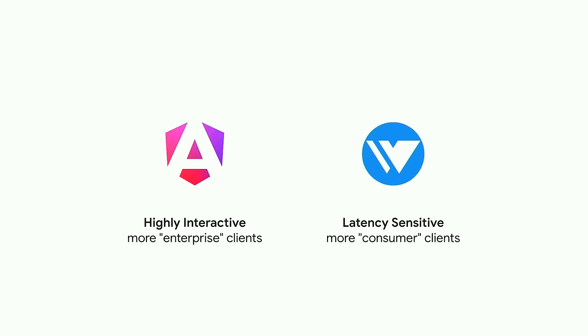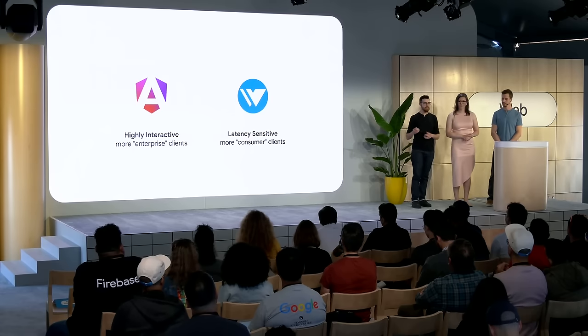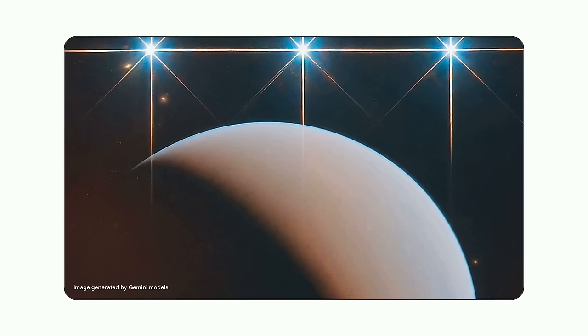Angular and Wiz have both existed in some form or another for over 10 years. The types of UI built with these two different frameworks were rather different — Wiz applications tended to be more consumer-focused for latency-sensitive products, and Angular applications were much more interactive, with a lot of overlap with enterprise UIs. But over time, the lines between these two types of UI started to blur. Wiz developers inside Google started wanting more features like Angular, and Angular developers wanted more performance-oriented features like Wiz. The two frameworks were converging on a lot of the same ideas, and people inside Google started to ask why they were duplicating so much work.